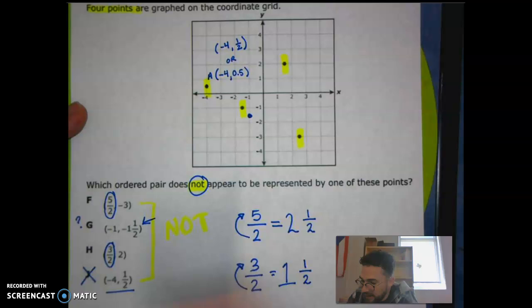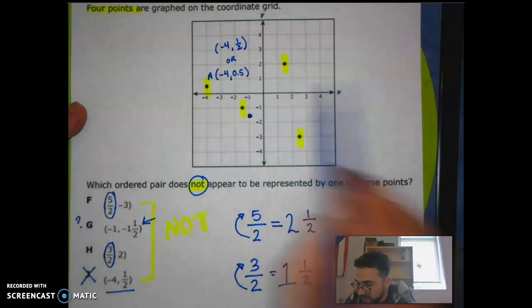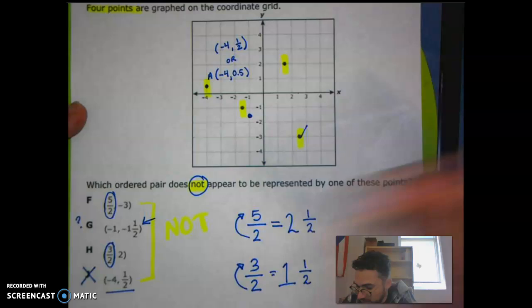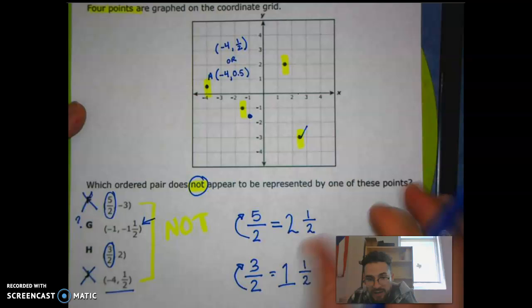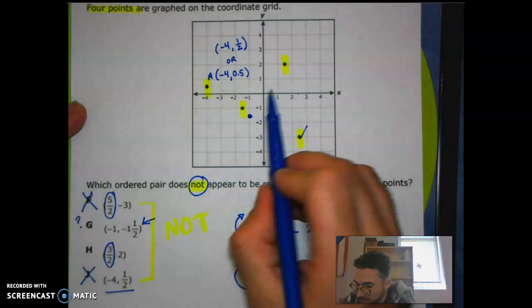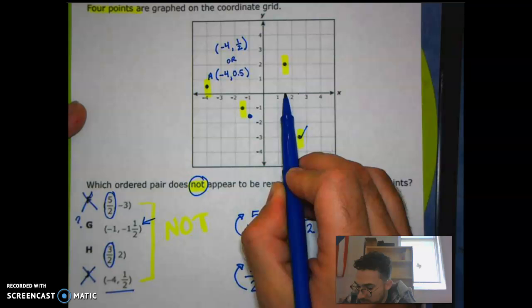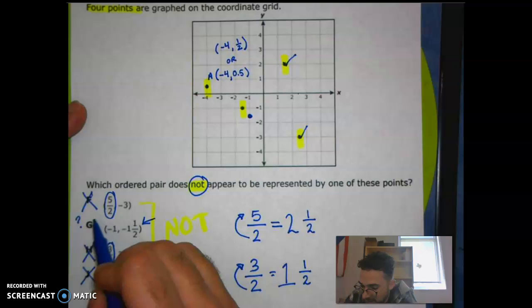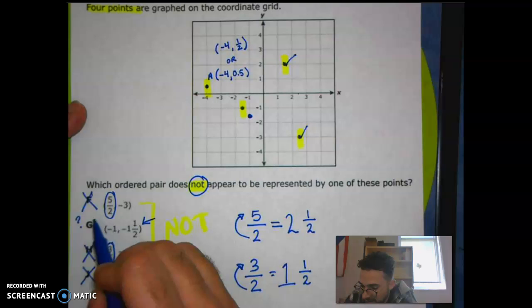If I were to graph these points, F being two and one half, I would start at my origin, move over to two and a half, which is right here on the x-axis, and then I would move down to three. That one works. So because it works, I'm looking for not. That is not my answer choice. And then finally down here, H, I found that it was one and a half for x. So I'm going to move over because it's positive one and a half on my x, and then I'm going to move up two because it's a positive two. That one is also a point. So we found that our answer is actually G in this case.